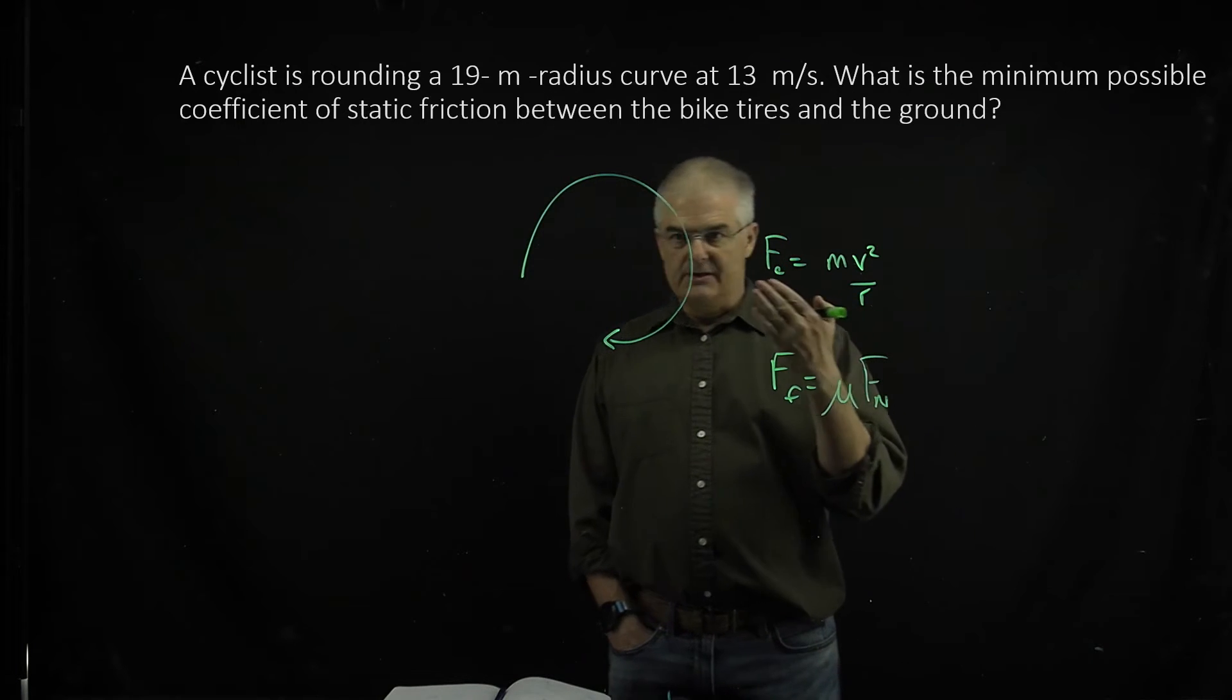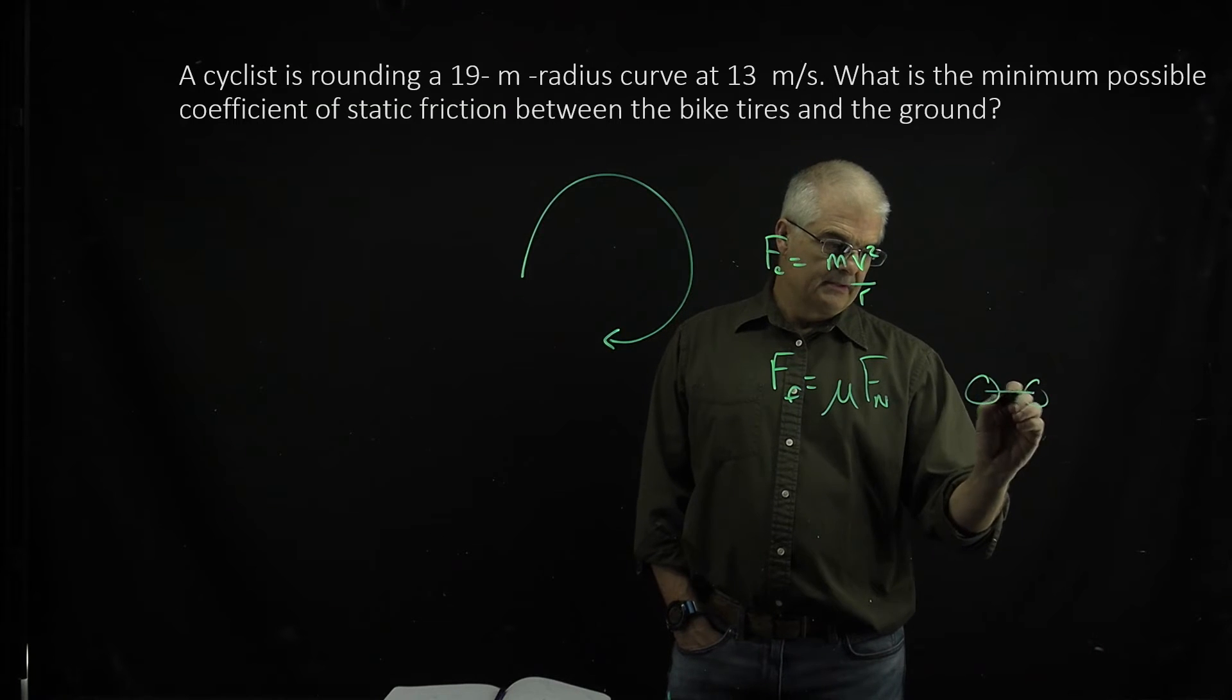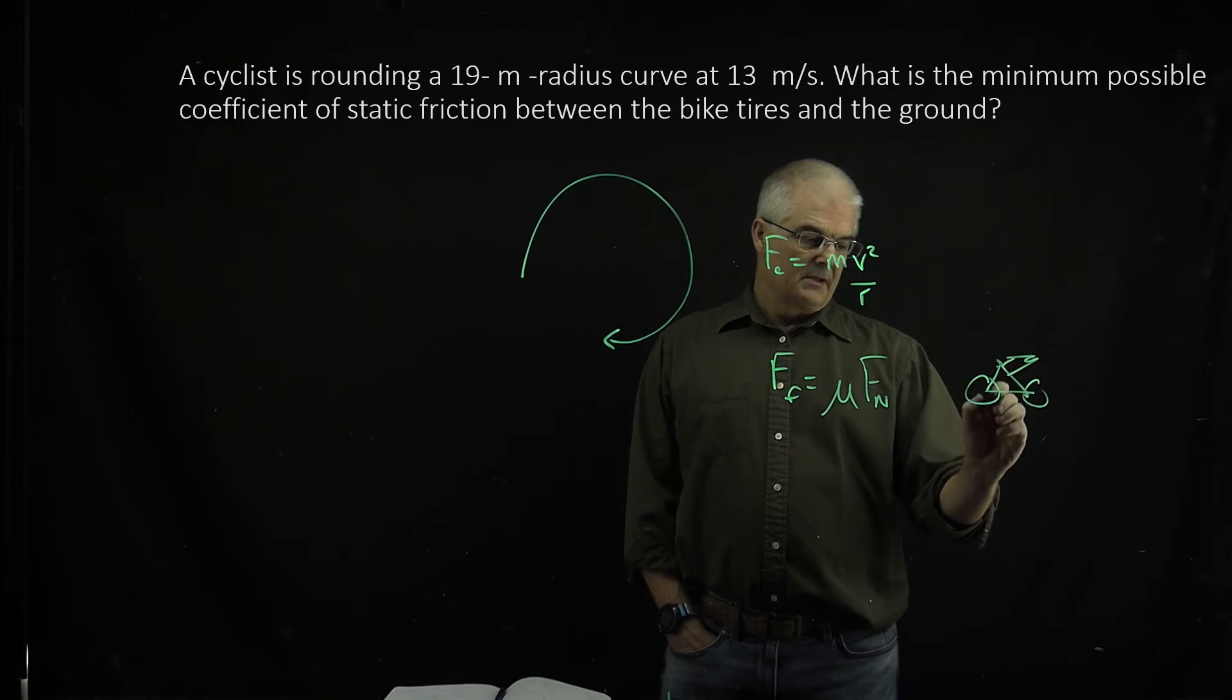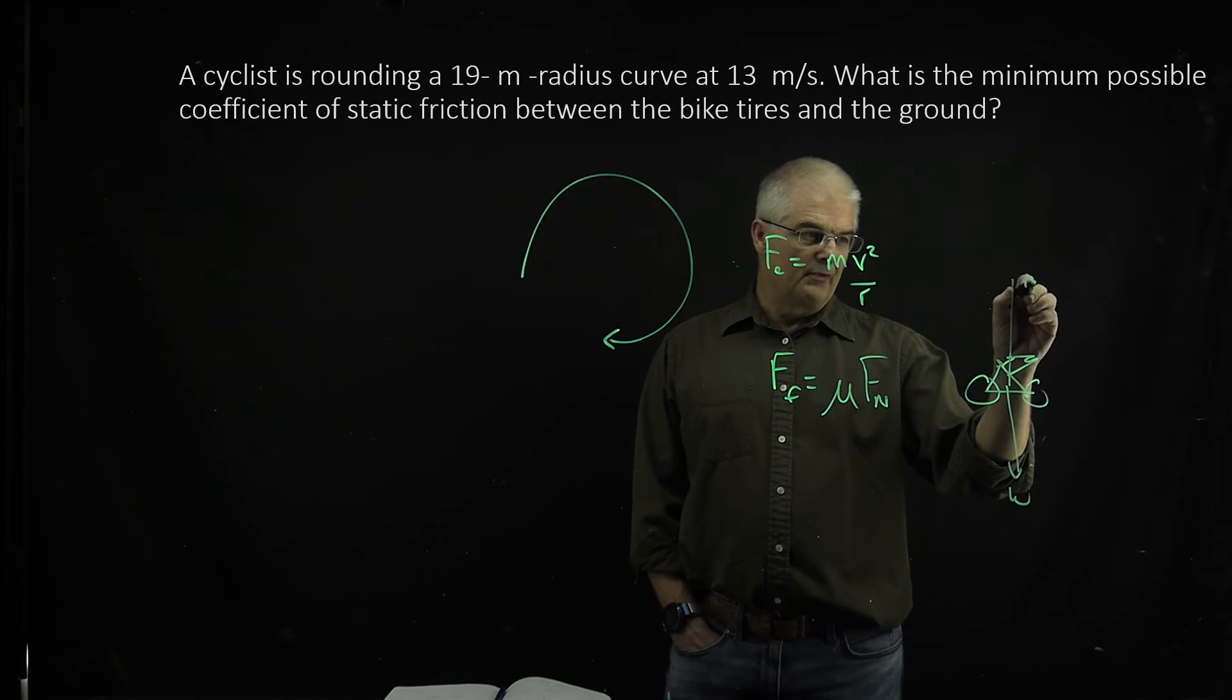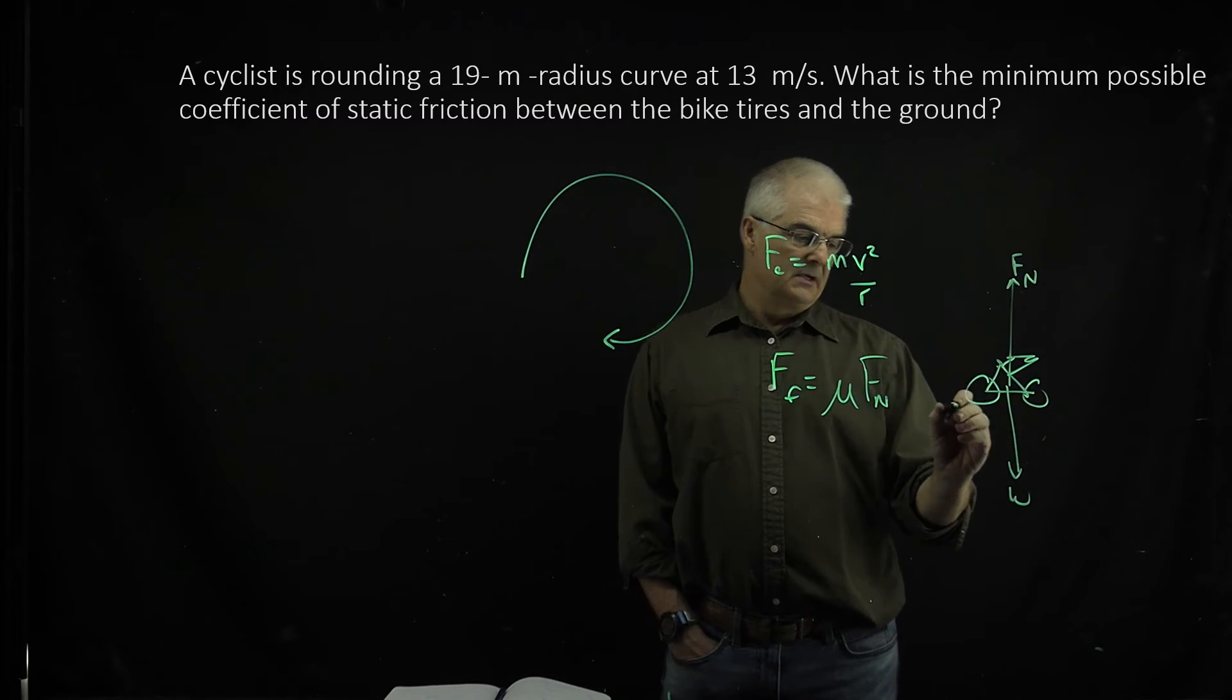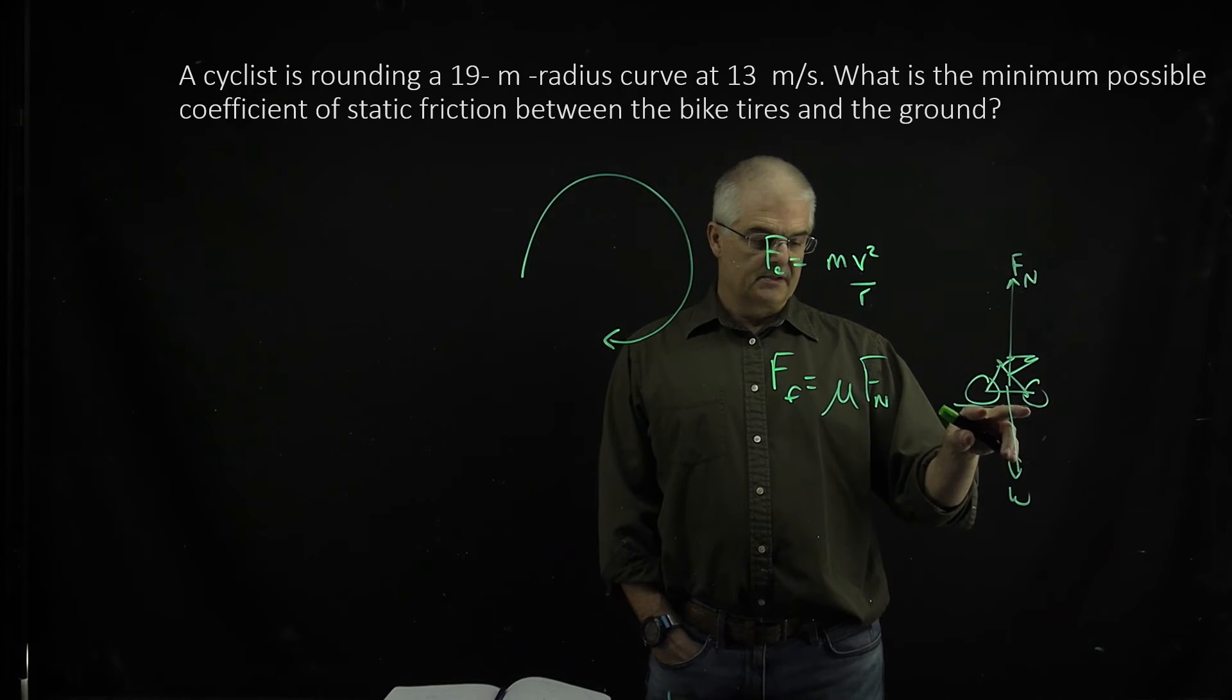And there's no angles or anything going on here, so if I've got the cyclist, the weight will be equal to the normal force, right, because the normal force is perpendicular to the contact space.